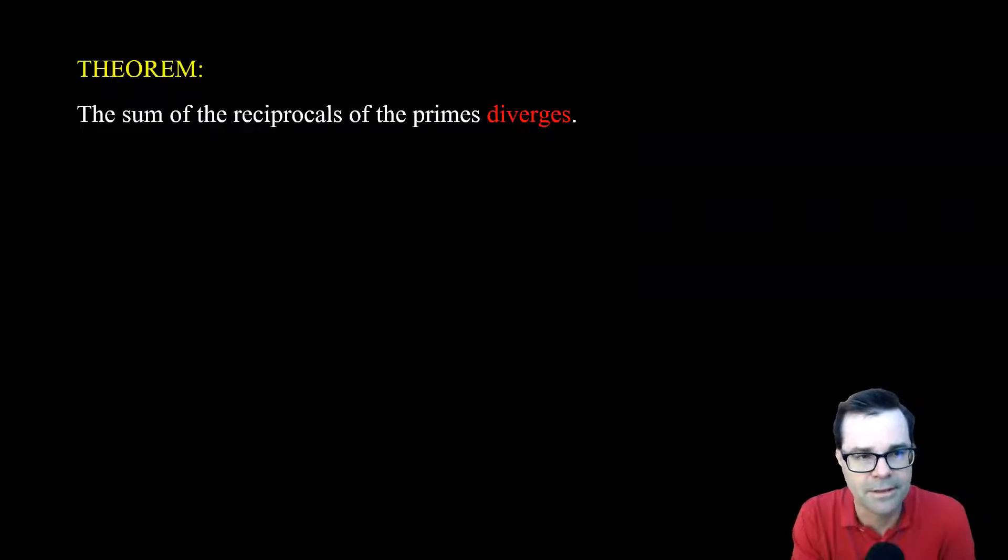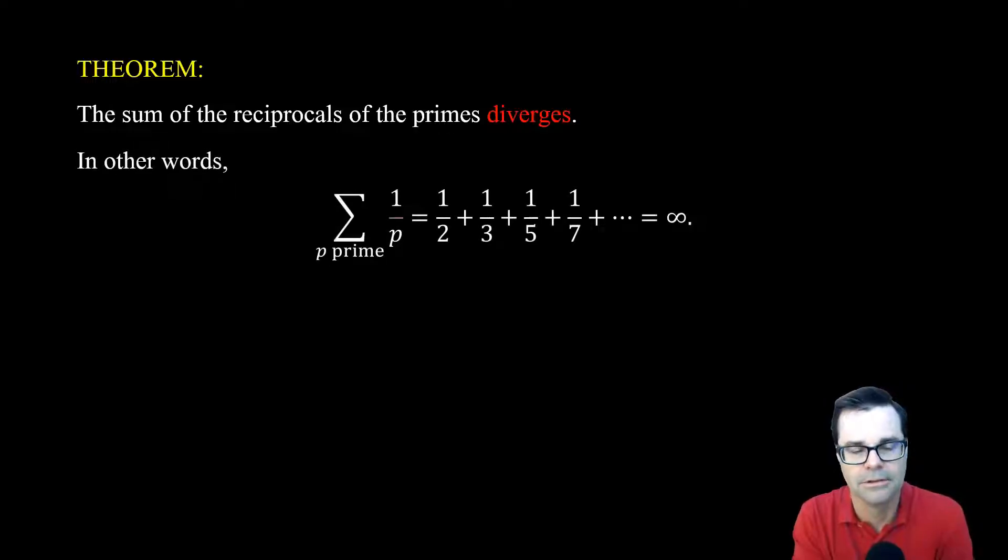So the theorem is the sum of the reciprocals of the primes diverges. In particular, if we sum 1 over p over all primes, so a half plus a third plus a fifth plus a seventh and so on, this is a divergent sum.